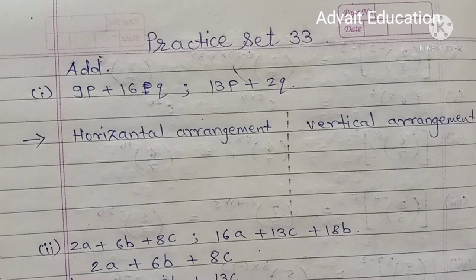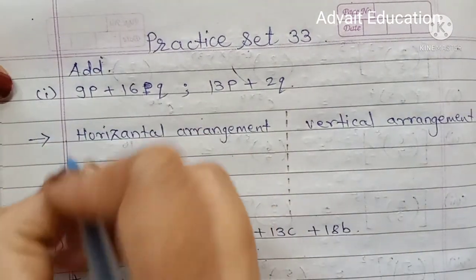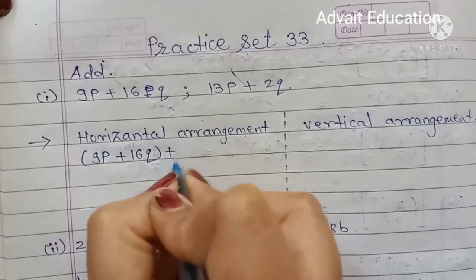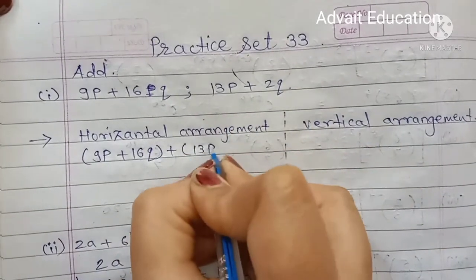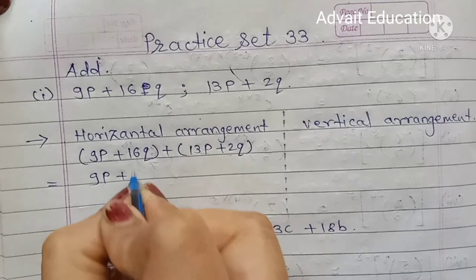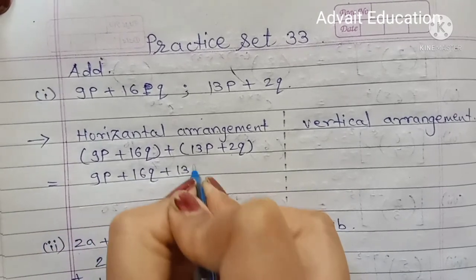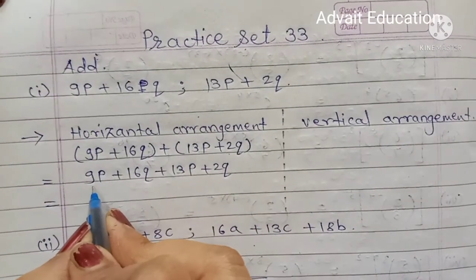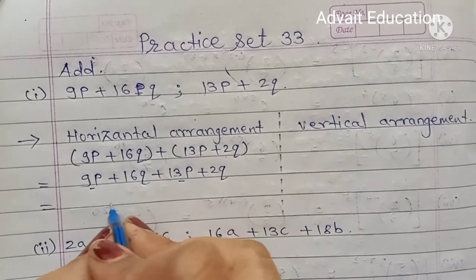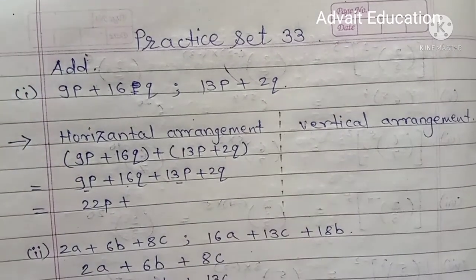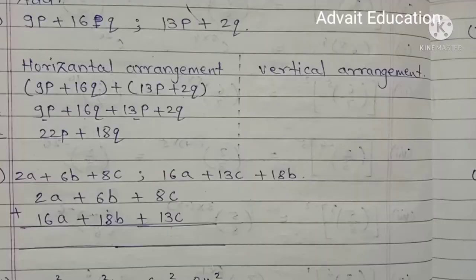You can solve with any method which is easier for you. Horizontal arrangement: 9P plus 16Q plus second term 13P plus 2Q equals 9P plus 16Q plus 13P plus 2Q. Now addition of like terms: 9P plus 13P means 22P, plus 16Q plus 2Q means 18Q.